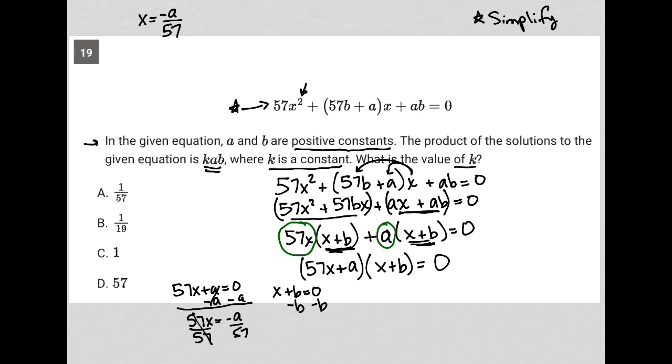And then here, subtract B from both sides. X equals negative B is another one of my solutions. So those are my two solutions here.